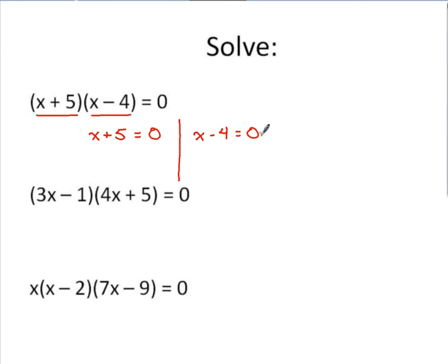With that understanding in mind, basically using this zero product rule as we call it, over here if I solve this equation x would equal negative 5. Over here if I solve this equation x would equal 4.